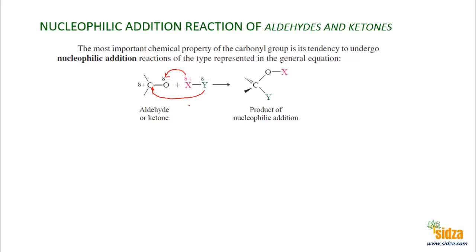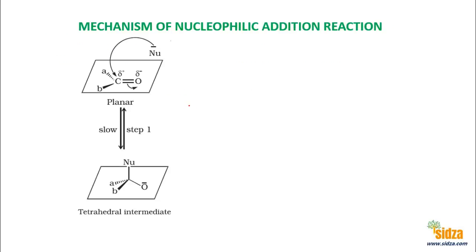Let's discuss the mechanism of the nucleophilic addition reaction. Carbon is an electron-deficient center, so the nucleophile attacks on the carbon, and the electron pair shifts to the oxygen. You get the nucleophile attached to the carbon and the oxygen becomes negatively charged. The carbon here is sp2 hybridized — this is a planar group where the three groups are in-plane — and once the nucleophile attacks, the hybridization changes.